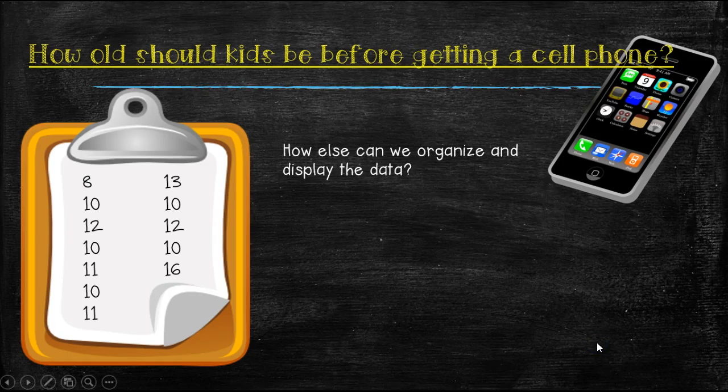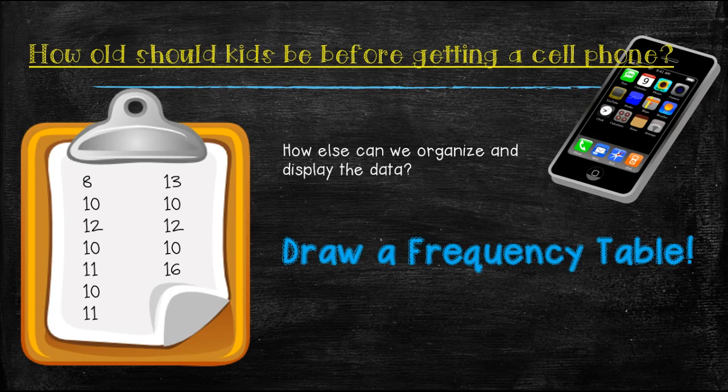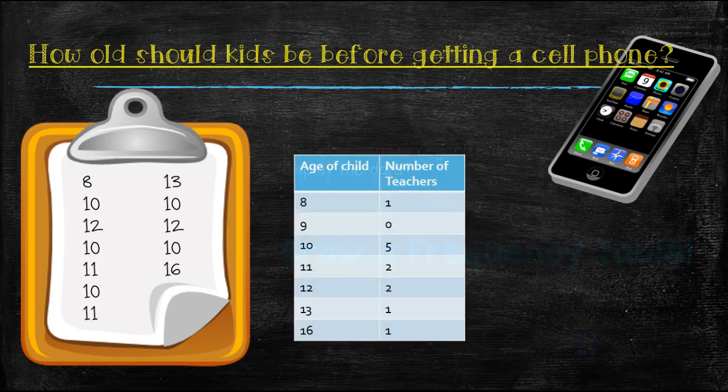So how else can we organize and display the data? Well, we could draw a frequency table. Here's how we would do it, using the same data that we gathered before. So here we have one column that shows the age of the child that respondents think a child should be before getting a cell phone. And over here is the number of teachers who responded with that answer.